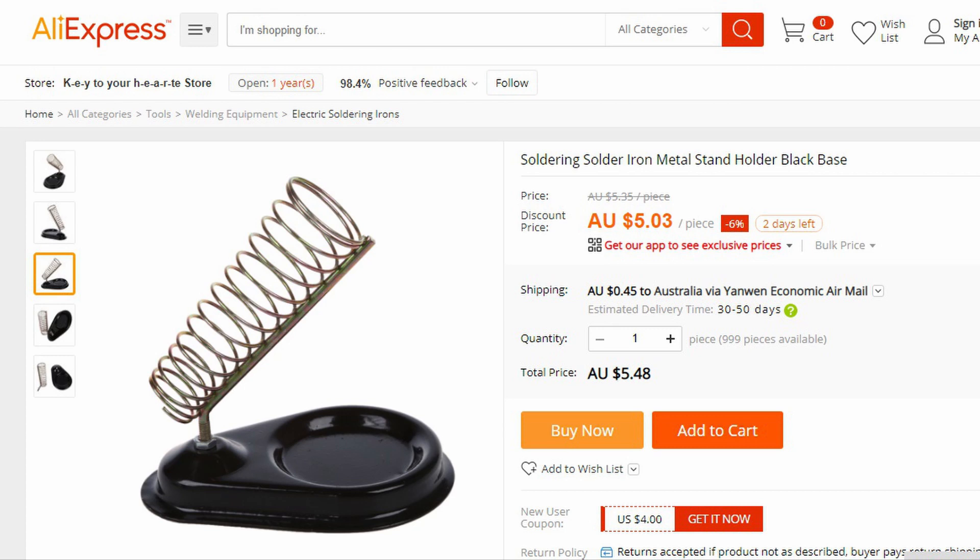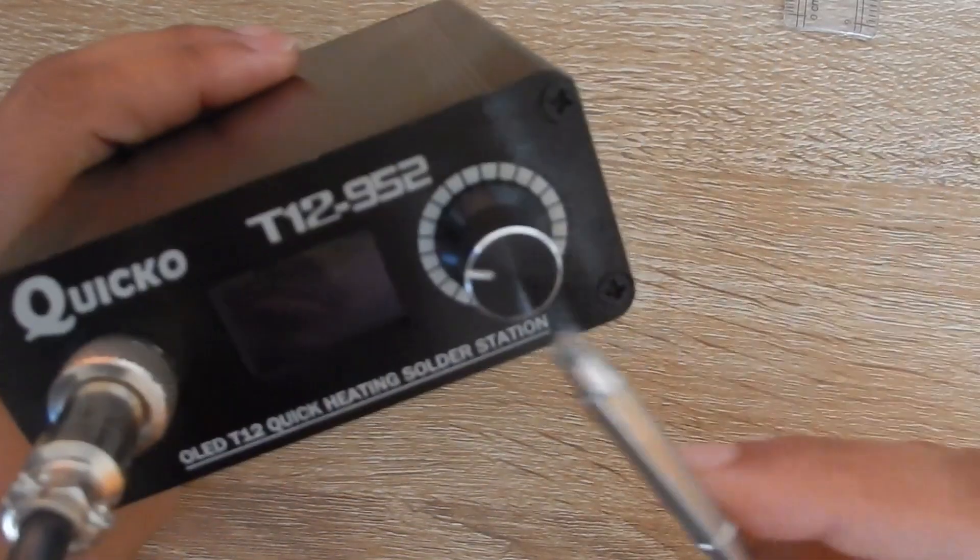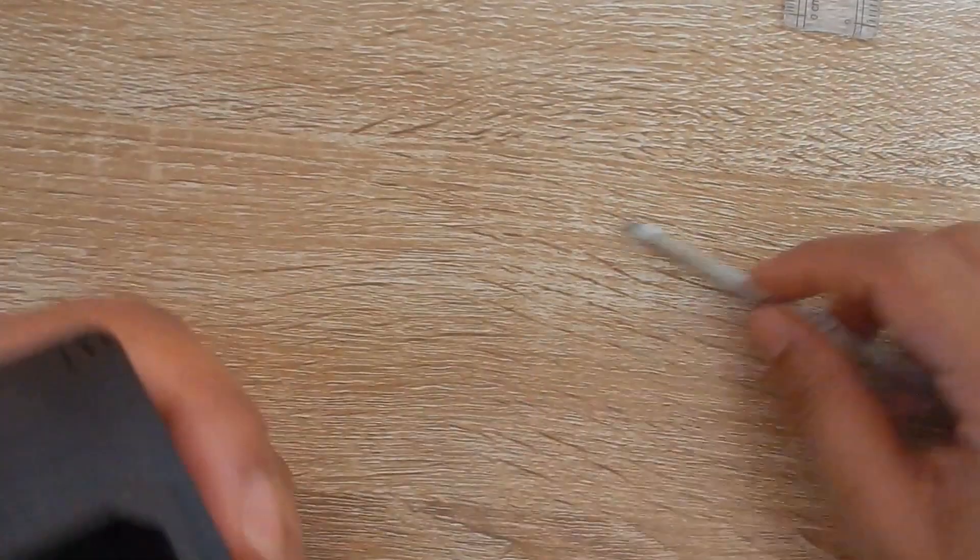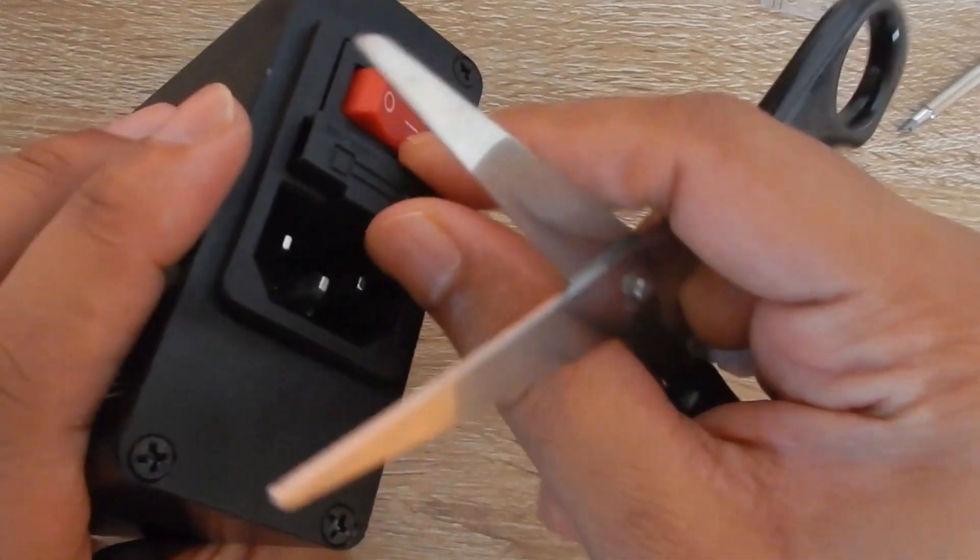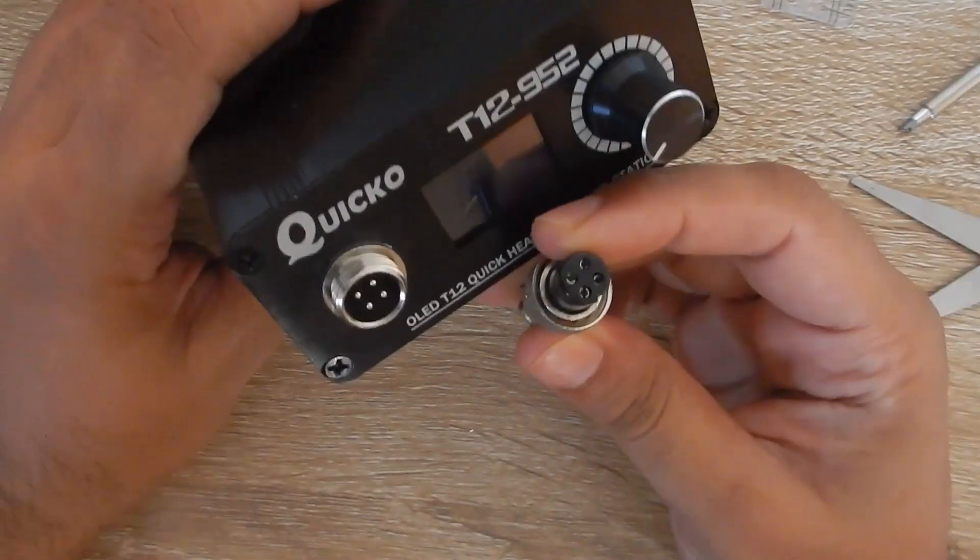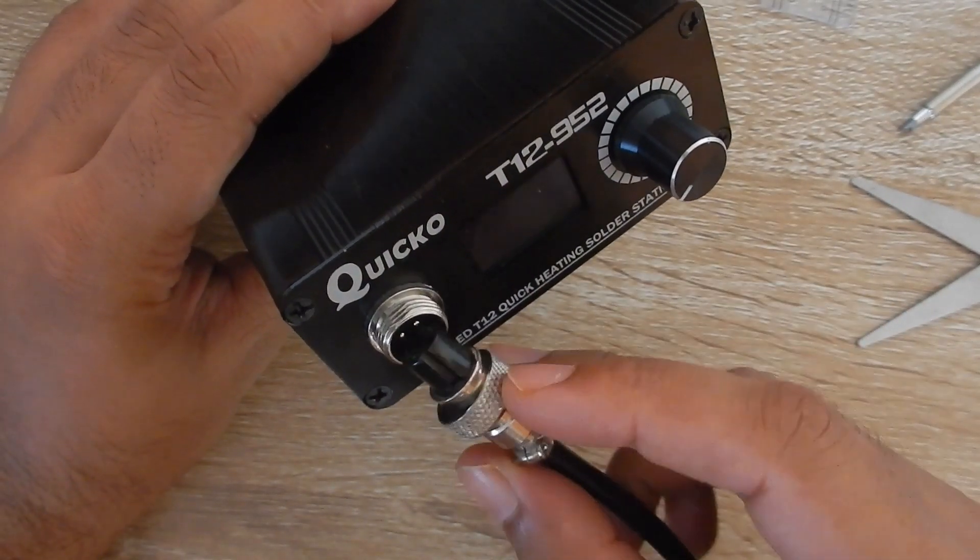The casing is made out of aluminum extrusion and a couple of laser cut metal sheets for the front and the back. The device has an IEC power cord and a fuse on the back. The soldering iron connects to the controller box via this four pin connector. The connector is very secure.